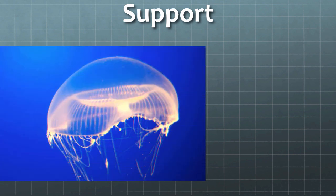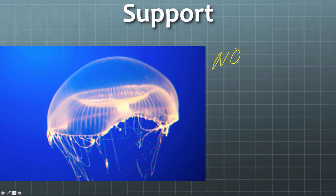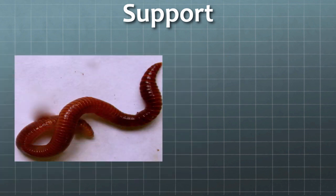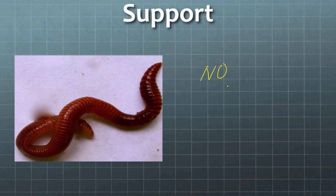Starting with support — this animal, for example, is a jellyfish. Does it have a skeleton? The answer is no, there's no skeleton. But does it have support? Absolutely. The water surrounding this animal gives it the support that it needs. What about this animal? Does it have a skeleton? Again, the answer is no, but yes it does have support.